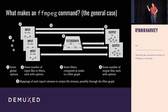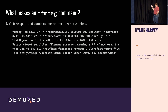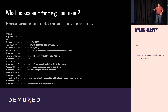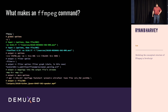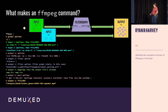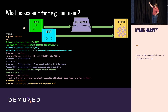What we'd like is for the code we write to be able to express this picture for whatever we're doing. So let's walk through an example using that command we saw before that's kind of hard to explain. Here it's rearranged, labeled, and color-coded. And now we can draw the picture of what's going on: one global option, two input files with different options, a filter graph, and an output file with a bunch of options on it.